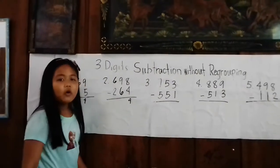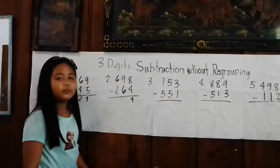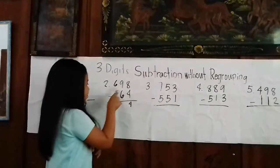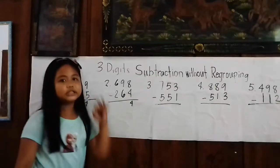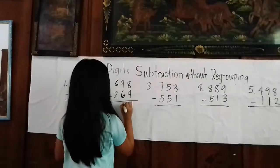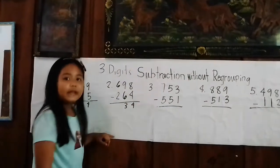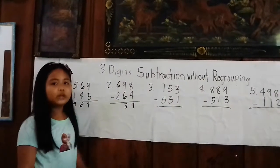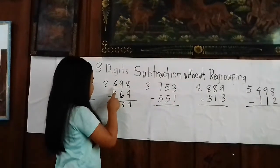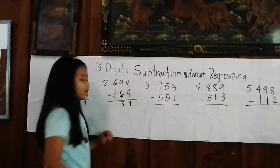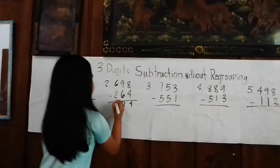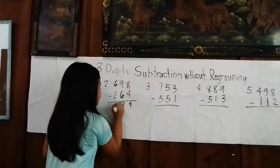Now we will subtract the tens place. 9 minus 6 equals 3. Now we will subtract the hundreds. 6 minus 2 equals 4. So the answer is 434.